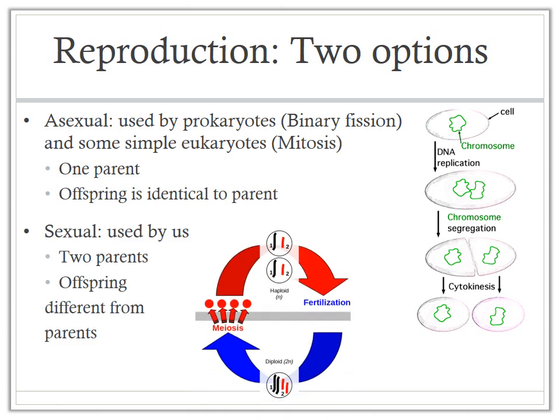Sexual reproduction is the other option. Many mammals, birds, larger eukaryotic organisms, plants, and fungi reproduce this way. With sexual reproduction, two parents produce offspring together, and the DNA from both parents combines to form a unique offspring — a mixture between the two parents. This is the biggest difference: sexual reproduction produces unique offspring and uses meiosis.